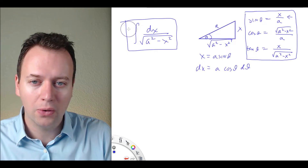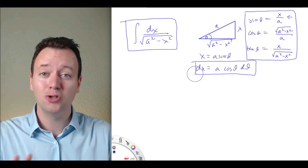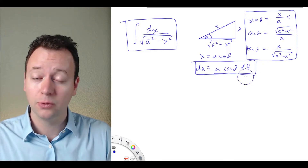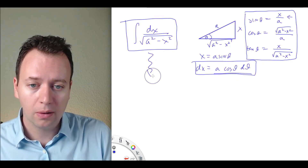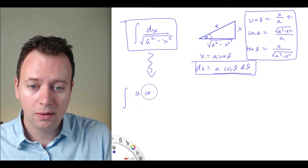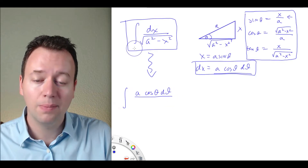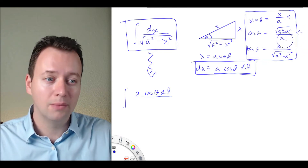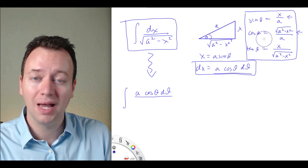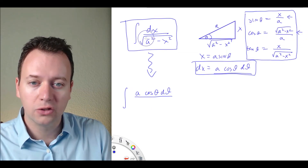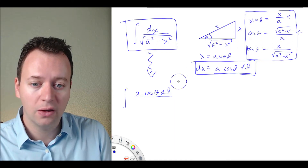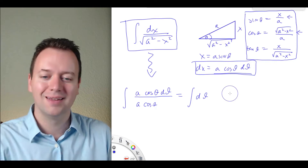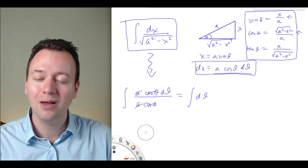Now let's apply the substitution to rewrite this integral in terms of theta only. The dx we replace with a cosine of theta dθ. So the integral becomes a cosine of theta dθ divided by the square root of a squared minus x squared. The square root of a squared minus x squared equals a cosine of theta, so it's divided by a cosine of theta. That's a nice easy integral — the a cancels out, cosine of theta cancels out, and we're left with the integral of dθ.